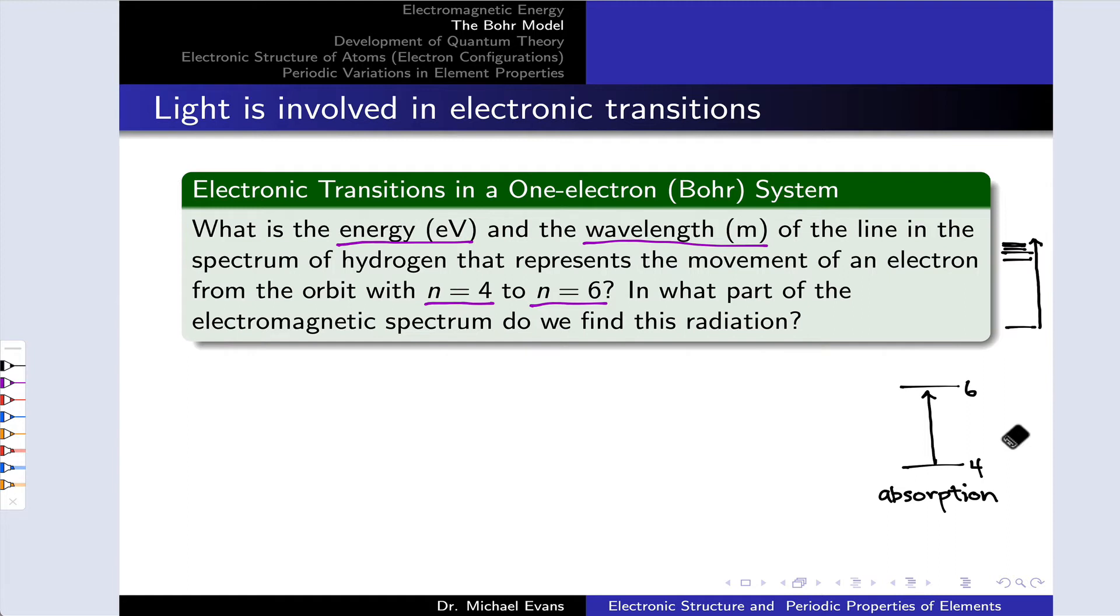To get started, we need to recall that the energy levels of the hydrogen atom are governed by the Rydberg equation. They're related to this difference between 1 over n squared between the initial and final levels, multiplied by the Rydberg constant R infinity, or R prime infinity if we're thinking in terms of a change in energy.